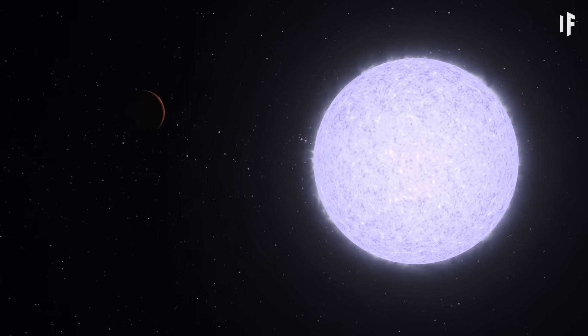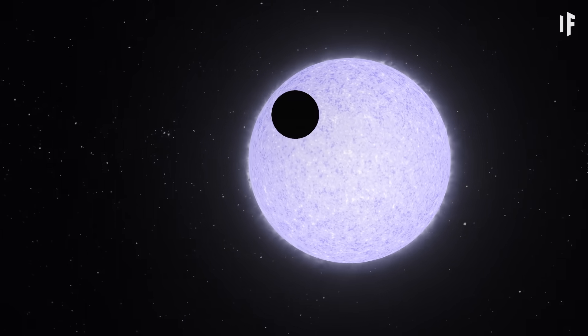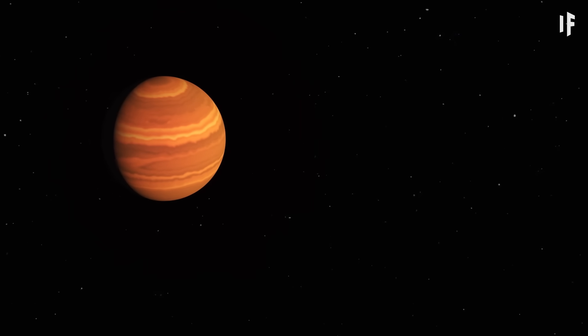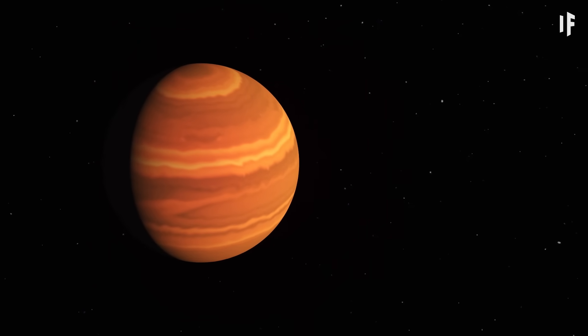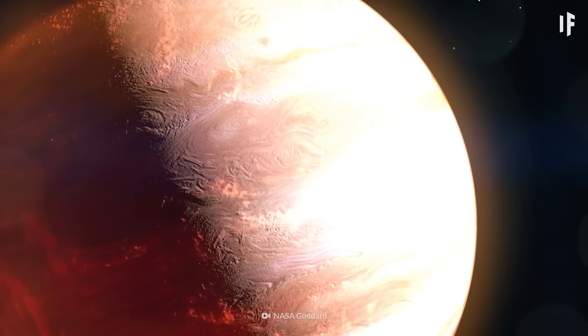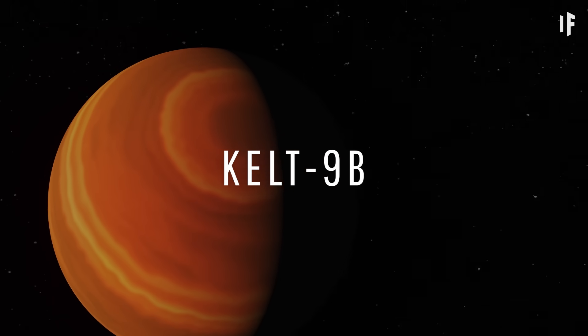But things could get even hotter. Some 670 light-years away from Earth, there's a planet so hellish that it's tearing molecules apart. Meet KELT-9b.